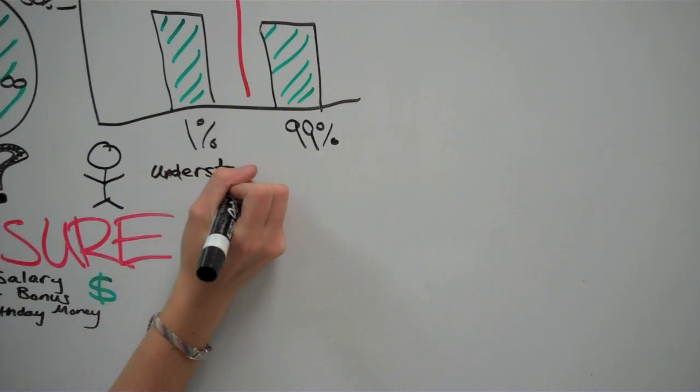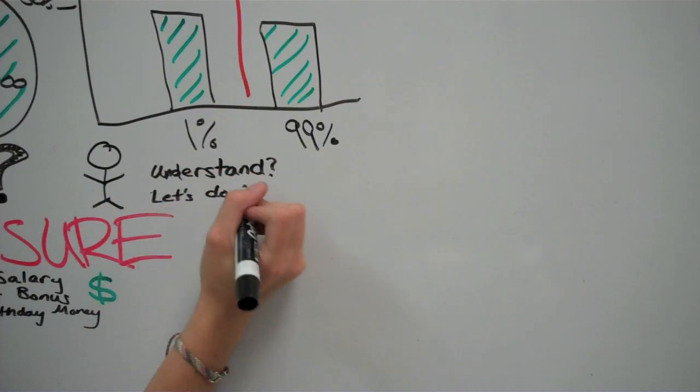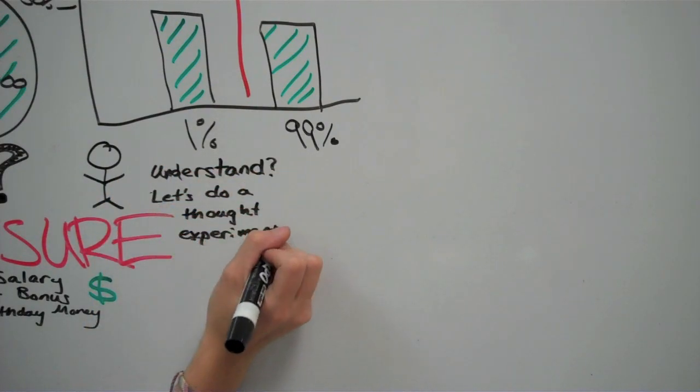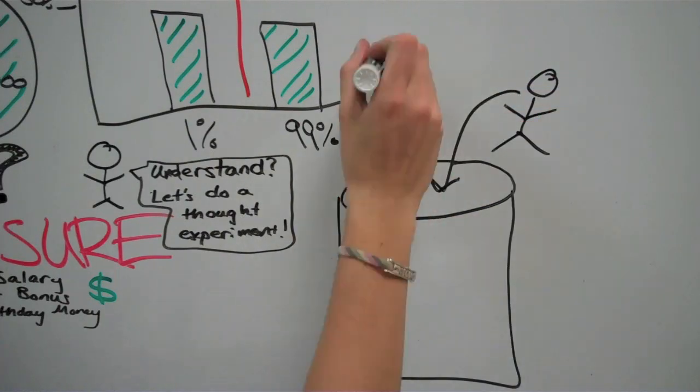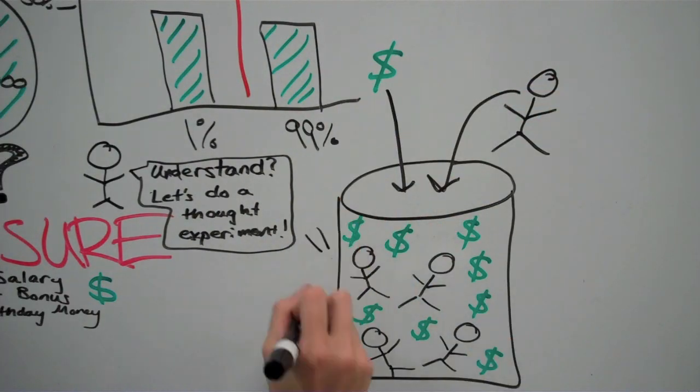Understand? But we want equality. Well, let's do a thought experiment. Let's say that all the world's money and people were put in a jar and energy was added to shake it up.